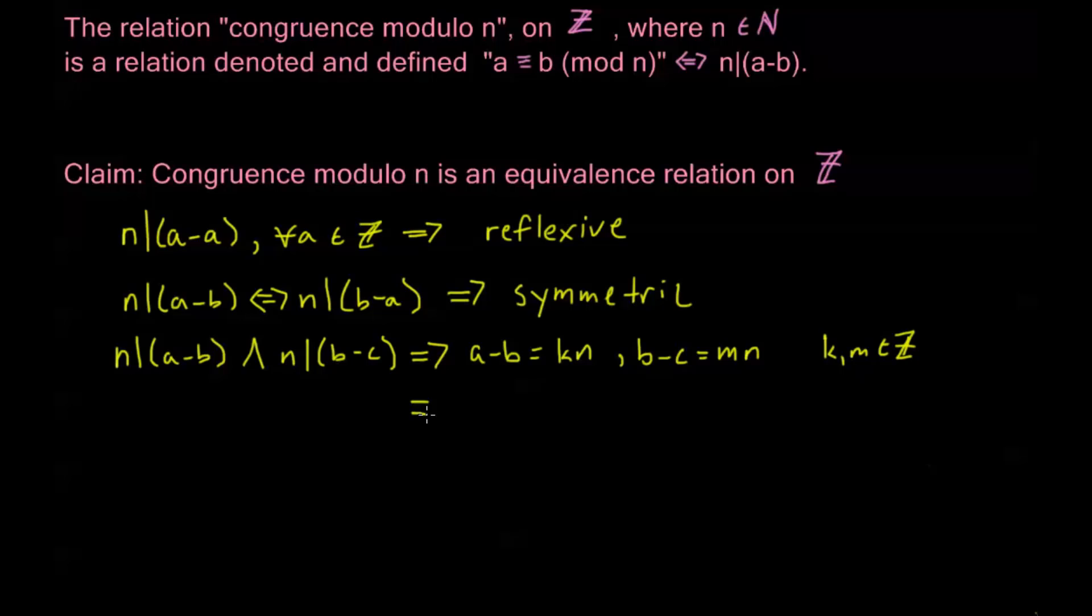So, with this in mind, this means that my a minus c is going to be equal to a minus b plus b minus c. We see that a minus b plus b minus c, our b's cancel. So, this is a minus c on both sides. But a minus b is equal to kn. And b minus c is equal to mn. So, a minus c, then, is equal to k plus m times n.